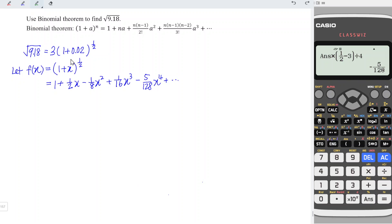What we need here is (1 + 0.02) to the power 1 over 2. In other words, we want to determine when x is equal to 0.02. So f(0.02) is approximately equal 1 plus 1/2 times 0.02 minus 1/8 times 0.02² plus 1/16 times 0.02³ minus 5/128 times 0.02⁴.